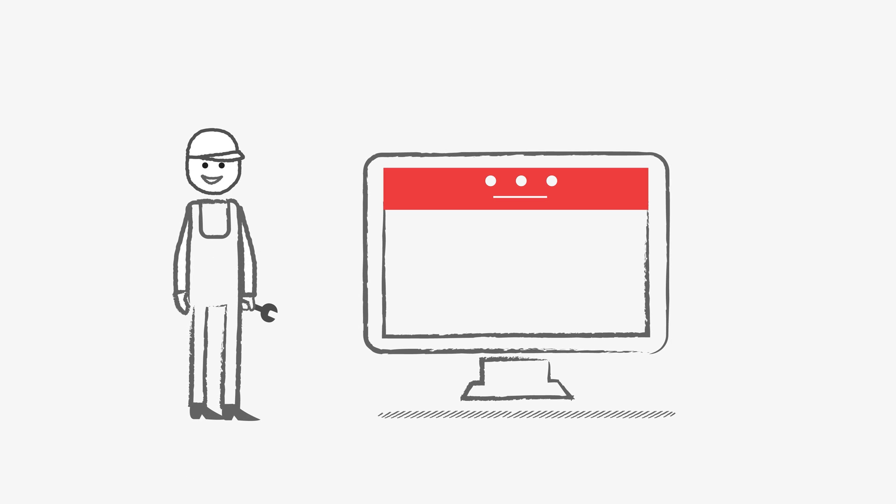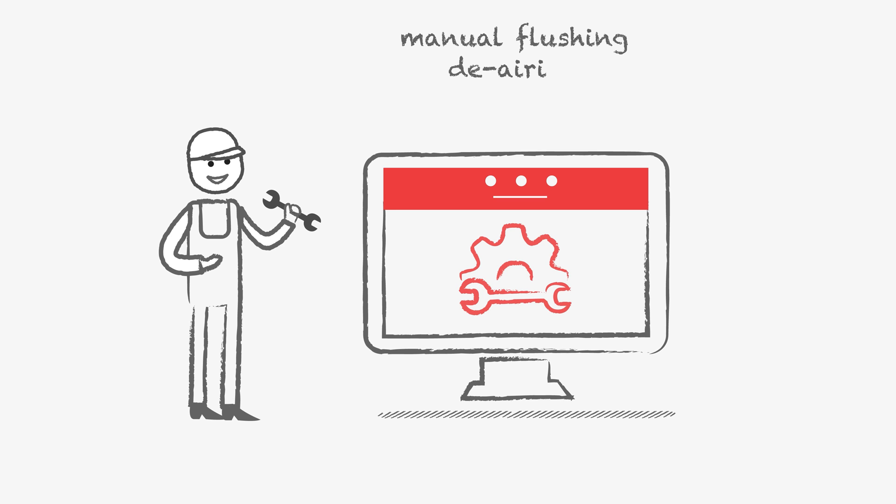To maintain this optimal efficiency and peak performance, the system requires monitoring and maintenance. This is often not that easy. There is still need for manual flushing, de-airing and commissioning of design flows.